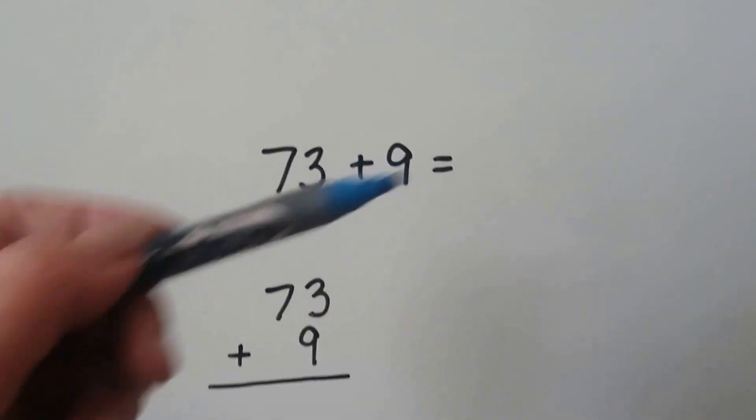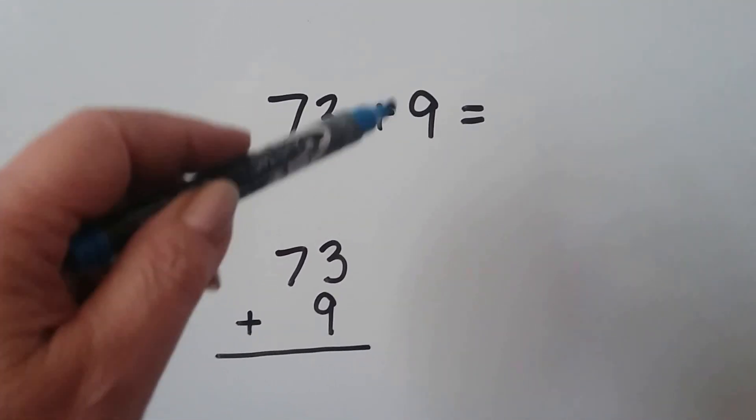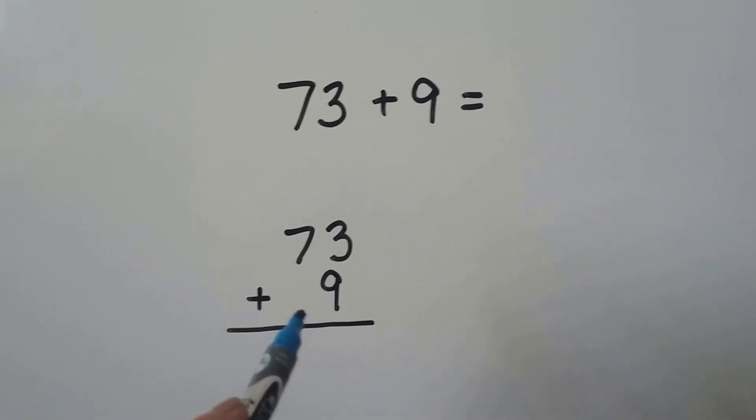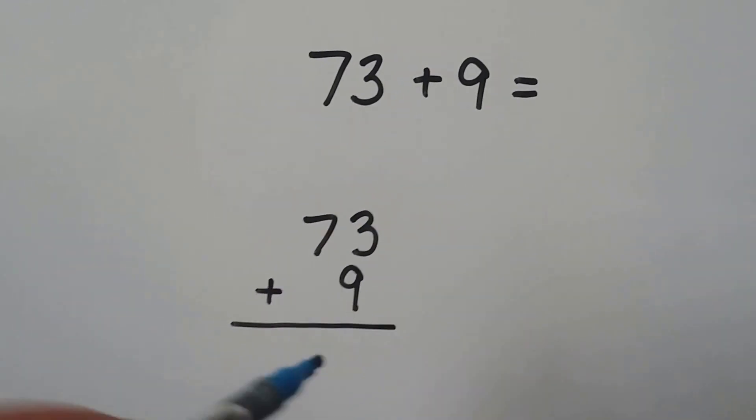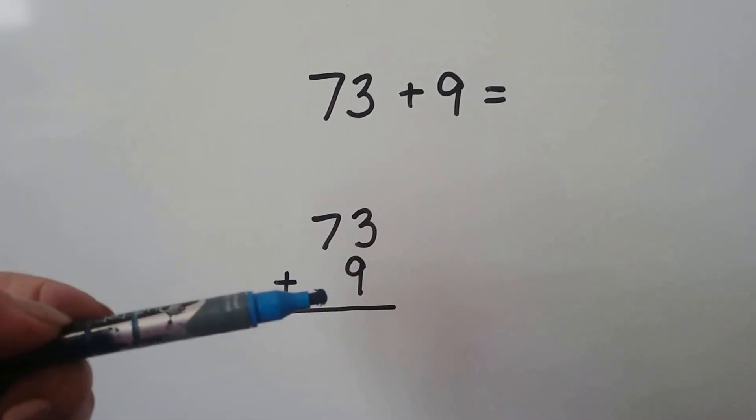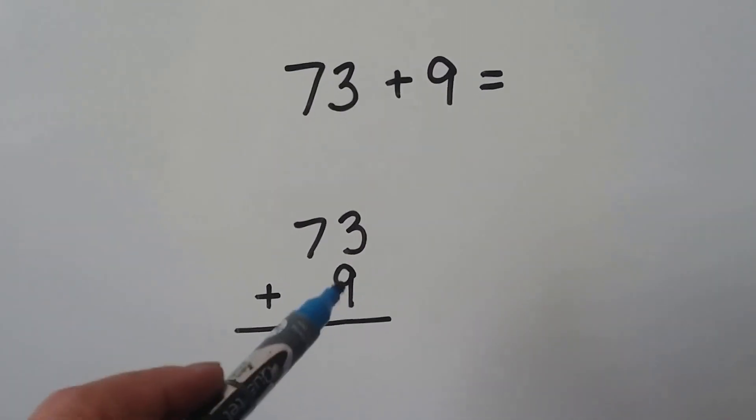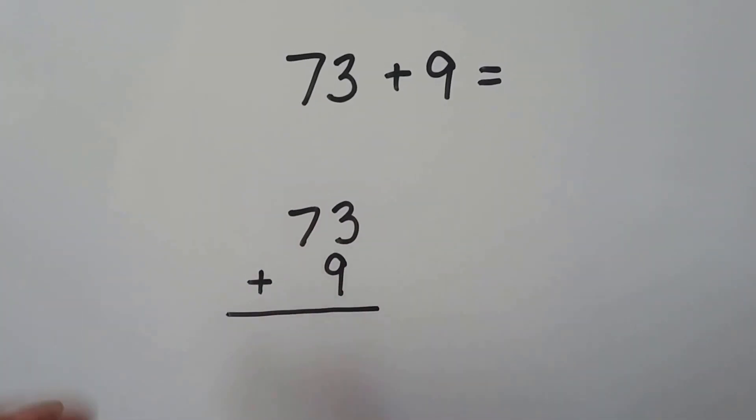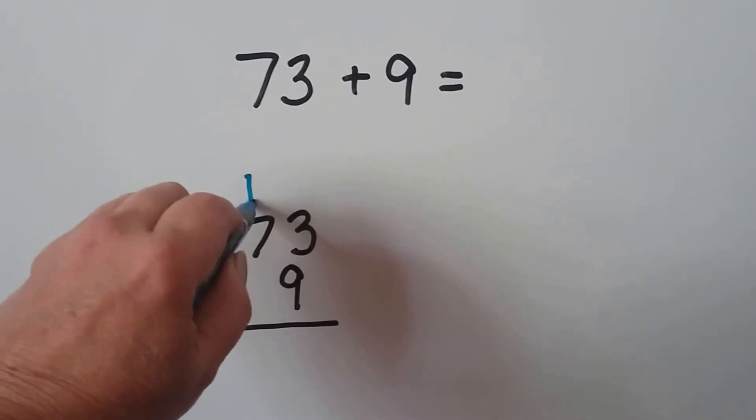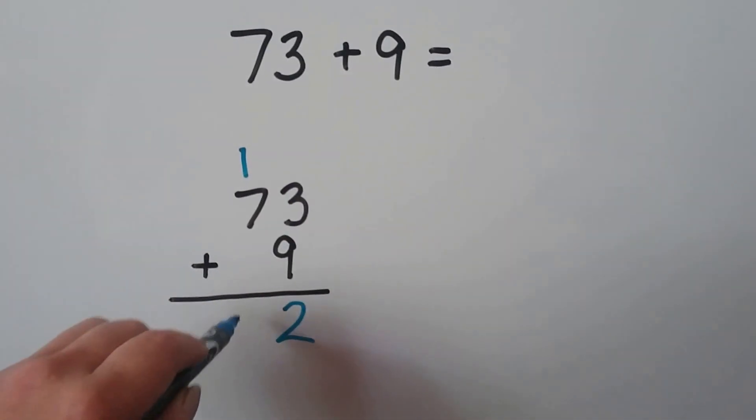Now we have 73 plus nine. Now this nine is just nine ones. There's no tens here. So we have to make sure that we put those nine ones in the ones place. Now we have 73 plus nine, and they're in the right place. We start with the nine and count up the three, nine, 10, 11, 12. We regroup the one up here and put the two down here. Now we add the tens place and we have an eight.